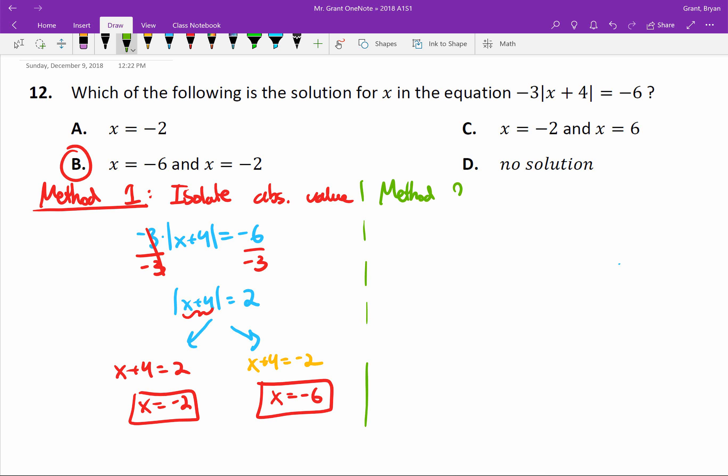However, I did want to demonstrate that second method. Method two has a bit of an advantage because you don't have to isolate the absolute value first. All you have to do is change the slope.